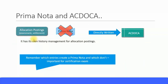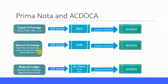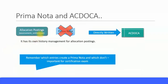How about allocation postings? For example, when you run assessment cycles, settlement cycles, or settlement rules — these are NOT prima nota documents. Remember, prima nota means primary or source document; these are secondary postings. So allocation postings have their own history management and are not prima nota. They are simply written directly to the ACDOCA table. You should remember the three types of prima nota postings: classic FI postings, manual CO postings, and material ledger postings — and that allocation postings are not prima nota. This is very important for the Simple Finance certification exam.